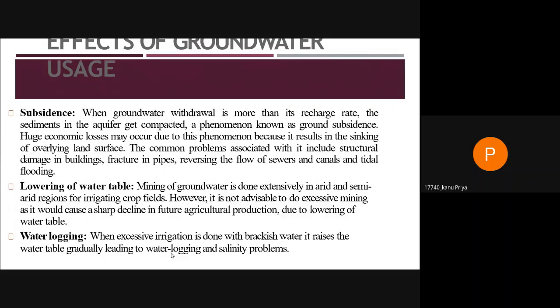Lowering of the water table occurs when extensive mining of groundwater is done in arid and semi-arid regions for irrigating crop fields. Excessive mining is not advisable as it would cause a sharp decline in future agricultural production. When excessive irrigation is done with brackish water, it gradually raises the water table, leading to water logging and soil salting problems.